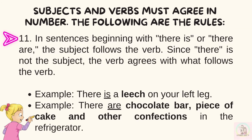Number eleven, in sentences beginning with 'there is' or 'there are,' the subject follows the verb. Since 'there' is not the subject, the verb agrees with what follows the verb. Examples: there is a litch on your left leg. There are chocolate bar, piece of cake, and other confections in the refrigerator.